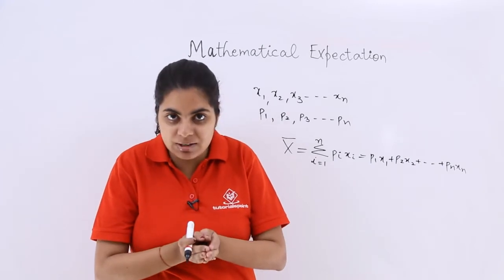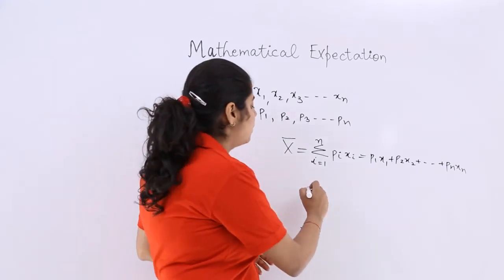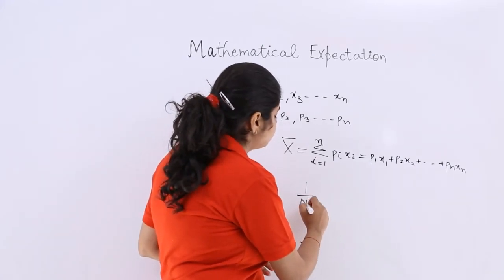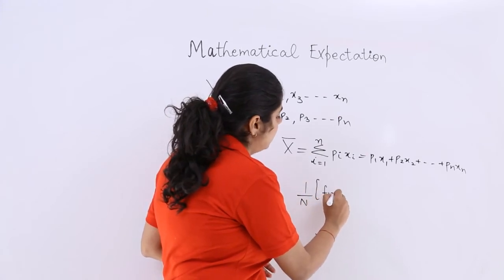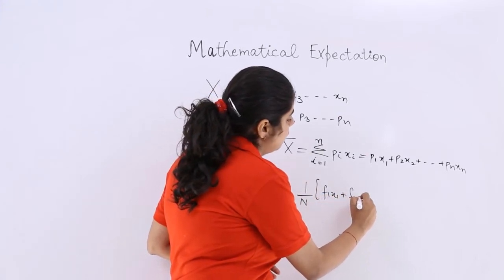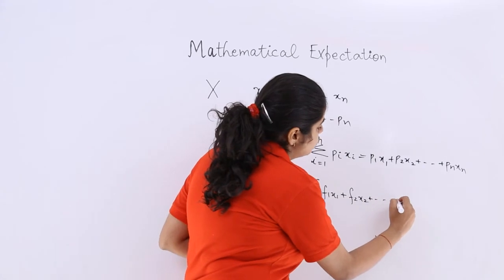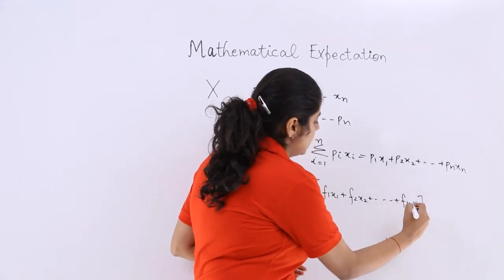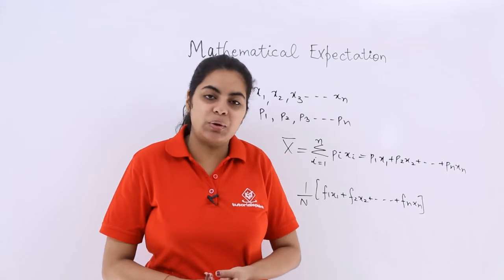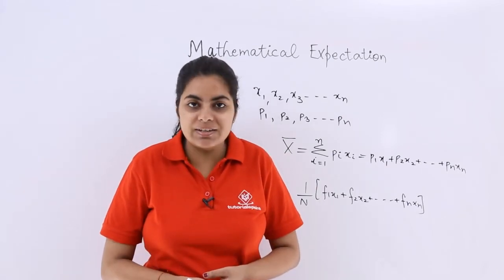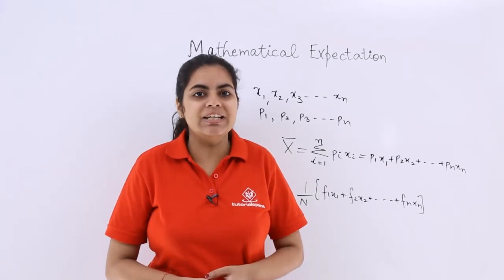Now if you have frequency, then in that case the mean would be 1 by n times (f1x1 plus f2x2 and so on up till fnxn), where f denotes the frequency of the discrete random variable that we are taking into picture.